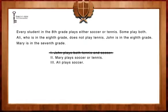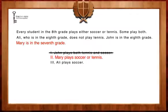When we review the second Roman numeral, it states that Mary plays soccer or tennis. Mary is in the 7th grade, and we are told nothing about 7th graders, so we do not know that Mary plays soccer or tennis. Hence, we can eliminate Roman numeral 2 as well.